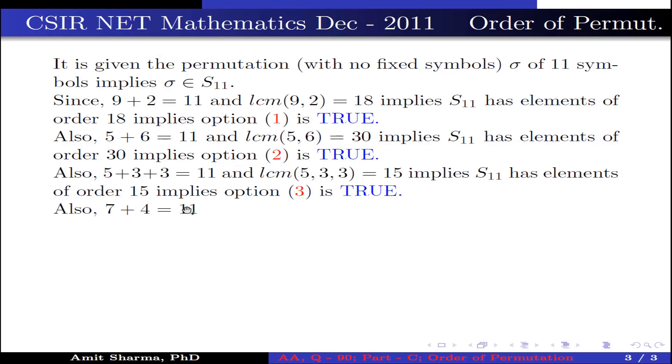Now, 7 plus 4 is 11 and LCM of 7, 4 is 28. This implies S11 has elements of order 28, or the permutation sigma can have order 28. This implies option four is also true.